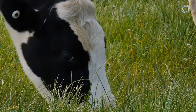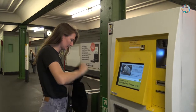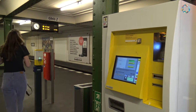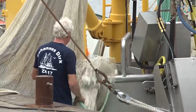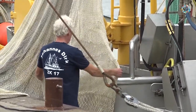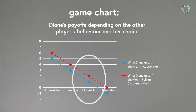You will discuss the problem of free riding and experiment with a group of fishermen who try to use a lake in a sustainable manner. To help you deal with such problems, you will be using a set of simple tools, models, and simulations that are typical for computational social science.